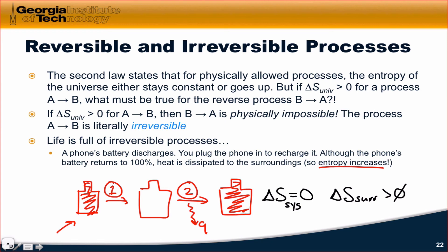Delta S for the surroundings must necessarily be greater than zero because heat is transferred out to the surroundings. This is the essence of the second law. All physically allowed cyclic processes like this involve a transfer of heat to the surroundings.